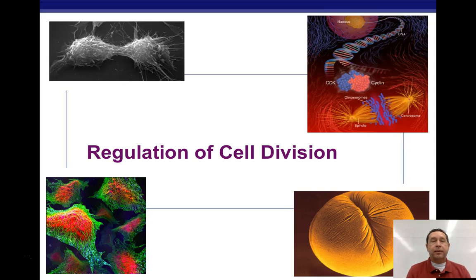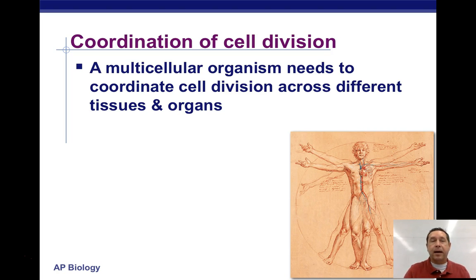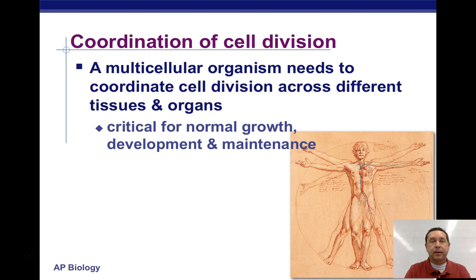In this video we're going to talk about some of the ways in which cells can regulate cell division, or the cell cycle. Why is it important? There needs to be coordination of cell division. In multicellular organisms, they need to coordinate cell division across different tissues and organs. Cell division doesn't happen at the same time or at the same rate in all parts of the bodies of multicellular living things. We need cell division for normal growth, development, and maintenance, but it has to happen in a coordinated way.